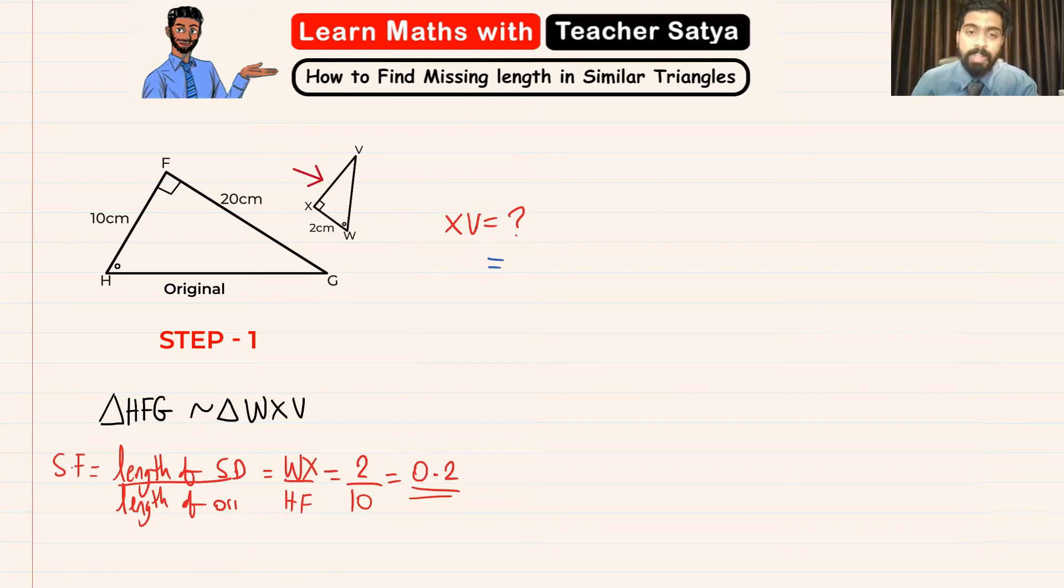XV is matching with FG right here. Now we know that FG is equal to 20 centimeters. What we are going to do is take the length of FG which is 20 and multiply with the scale factor which is 0.2, and 20 multiplied by 0.2 is equal to 4 centimeters. Therefore our XV is equal to 4 centimeters.